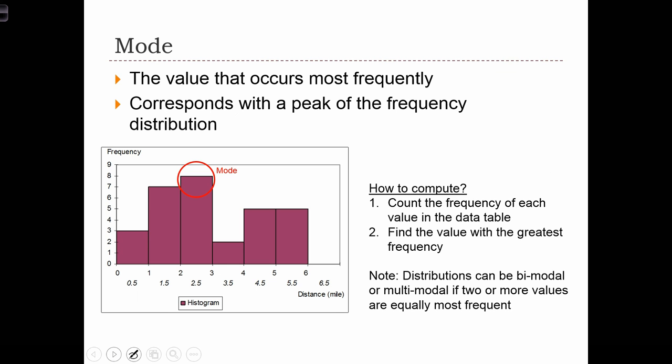The mode is a very straightforward measure of central tendency. It is simply the value that occurs most frequently in our distribution. So if we have a frequency distribution drawn out as a histogram, then the mode is going to occur at the peak of the histogram. All we do in this case to compute the mode is count the frequency of each value in the data table and find the value with the greatest frequency.